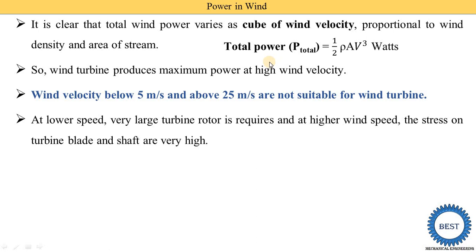For a 1 MW windmill, we have options: velocity available at 5 m/s or at 15 m/s. If we install a 1 MW capacity windmill where velocity is 15 m/s, the required area is lower. If velocity is 10 m/s, the area of the windmill must be increased. We cannot install a windmill where wind velocity exceeds 25 m/s because the stress on turbine blades and shaft becomes very high.